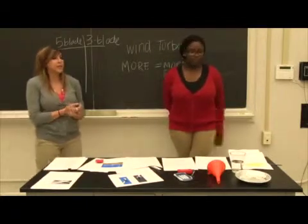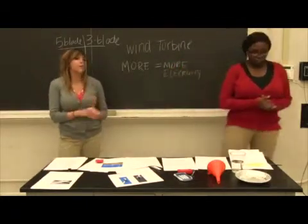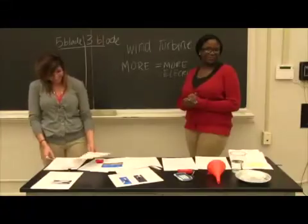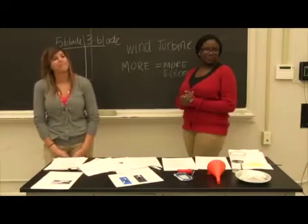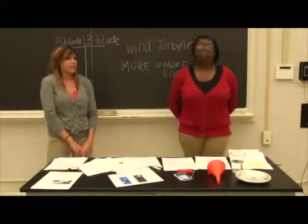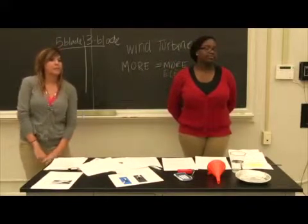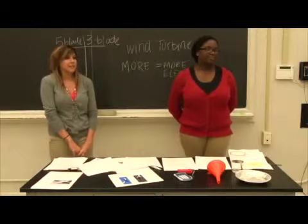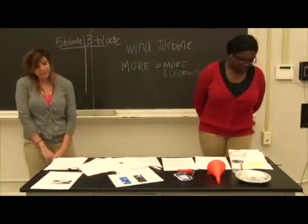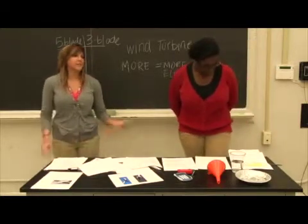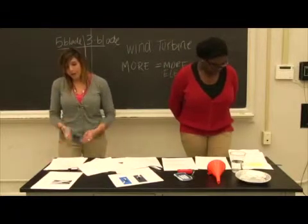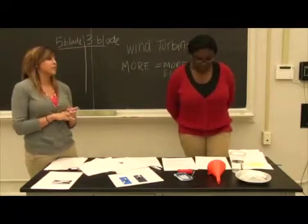Try and talk with your group and discuss what that means — why would the three-blade be faster? Maybe because it's lighter. What's another observation about the number of blades? Because it has fewer blades so it goes faster. Correct. The three-blade goes faster because it has three blades instead of five — a smaller number of blades. So what are some things we could change in this experiment? What it's made of.